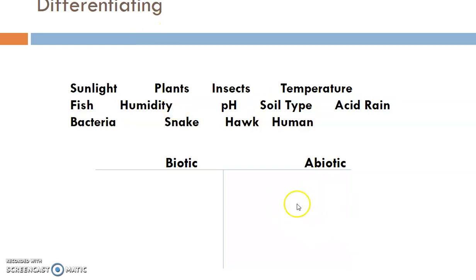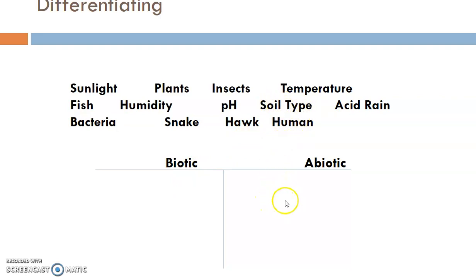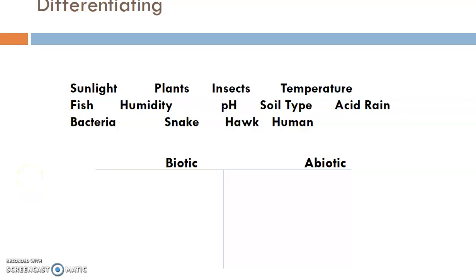Humidity — the moisture in the air — would be considered abiotic. pH is also an abiotic factor. Soil type: there's a big controversy as to whether it's biotic or abiotic — if it contains seeds or anything living in it, it would be biotic, but soil or dirt by itself would be abiotic. Acid rain is abiotic. Bacteria are considered living, so that's biotic. Snakes, hawks, and humans are all biotic.